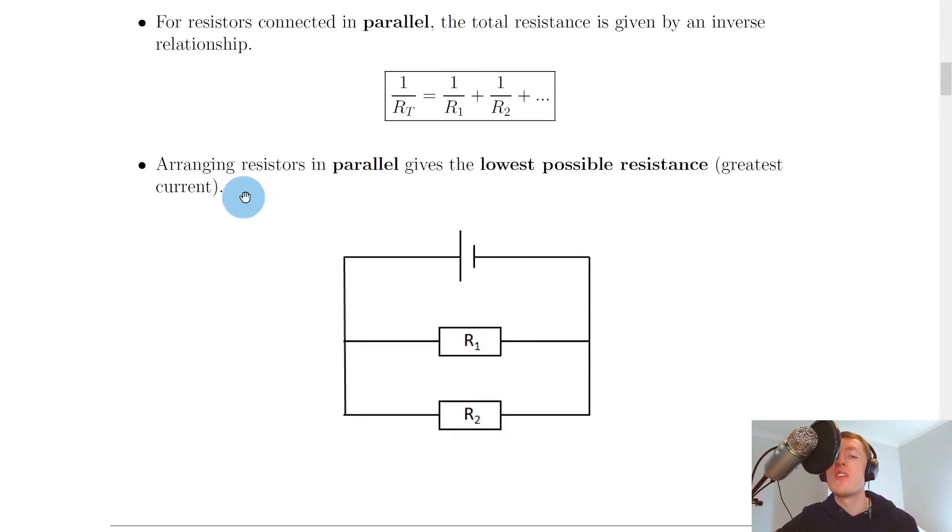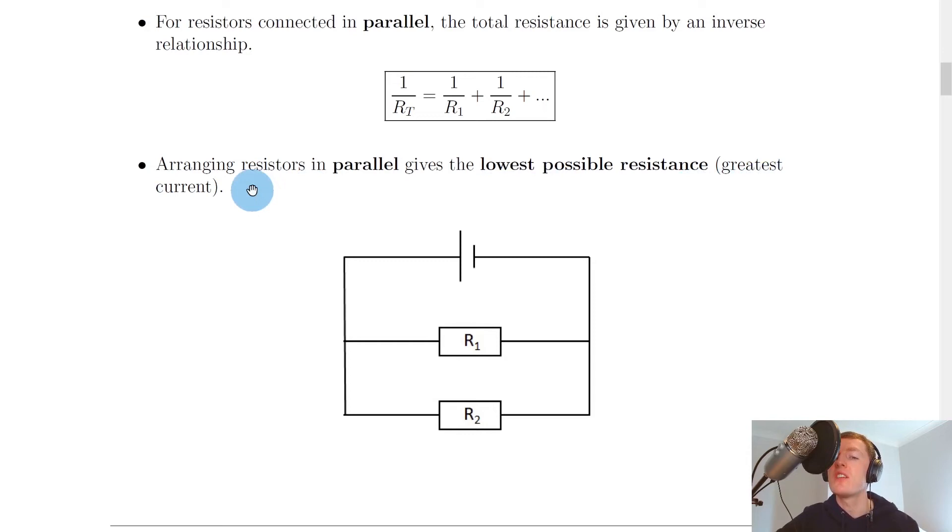It's also the case that arranging resistors in parallel gives the lowest possible resistance, i.e. the greatest current. And so this is the opposite to when we add resistors in series.